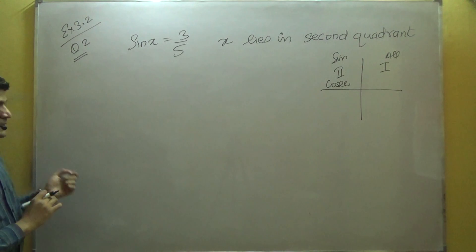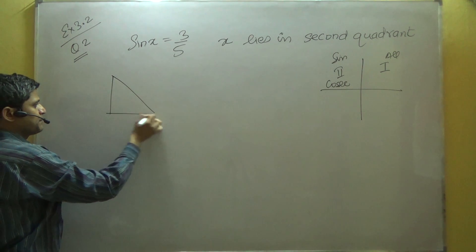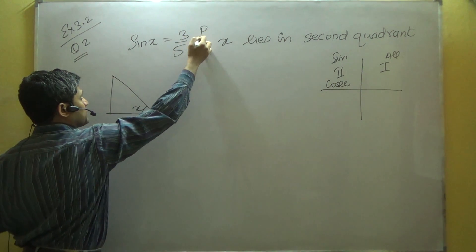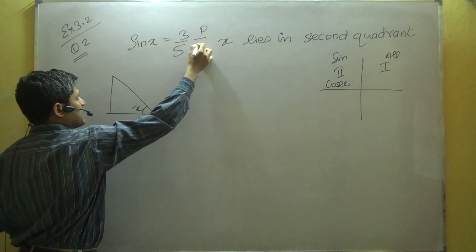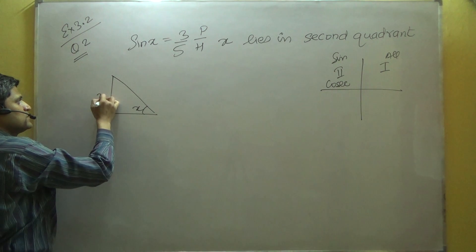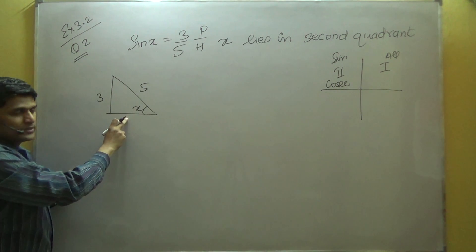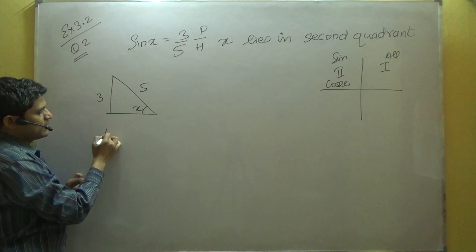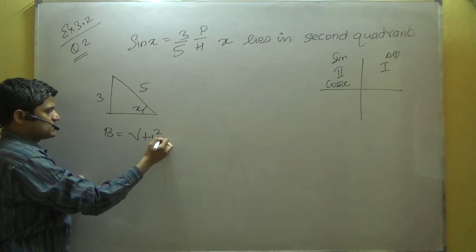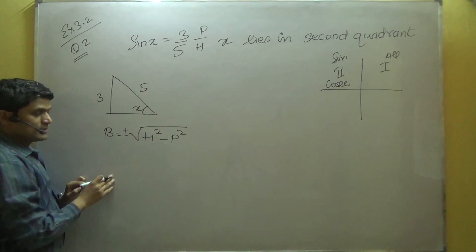Let's do the first method. I will draw a triangle here with angle x. 3 is the perpendicular and 5 is the hypotenuse. So the perpendicular is 3 and the hypotenuse is 5. I need to find the base. We know that b equals the square root of h squared minus p squared, with a plus or minus sign.